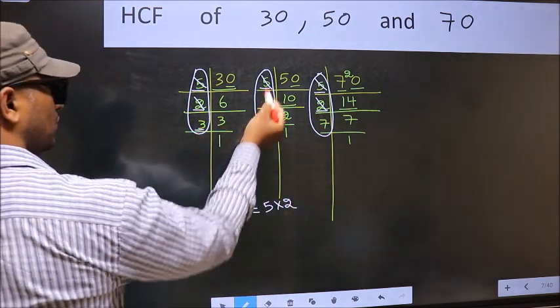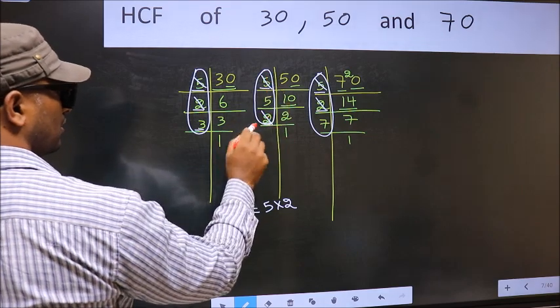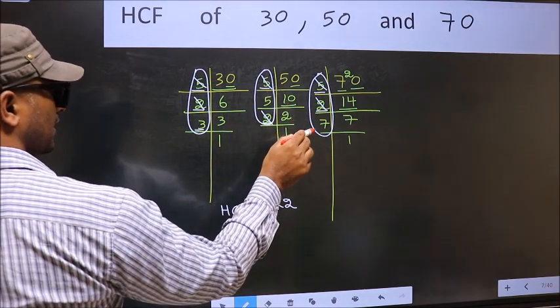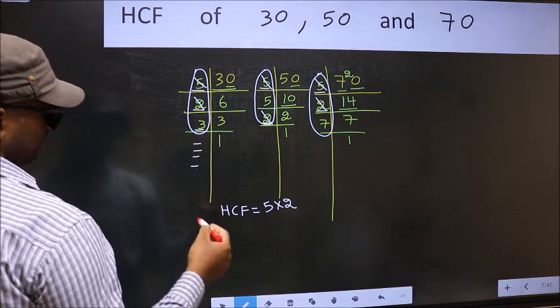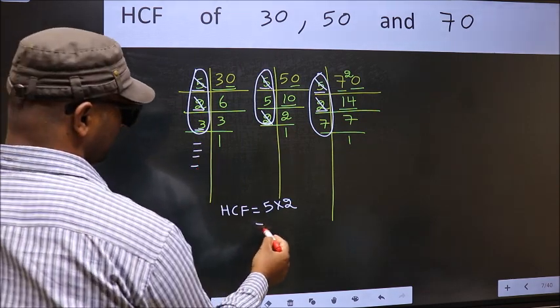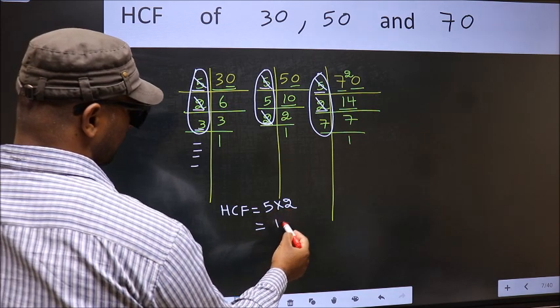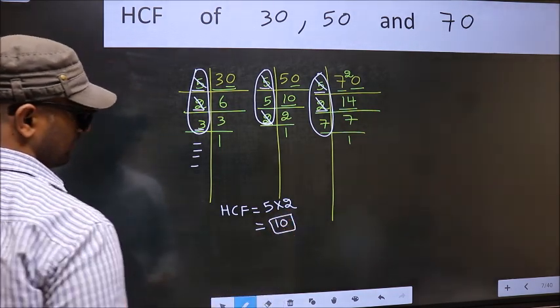Next number 3. Do we have 3 here? No. No need for us to check in the other place. No more numbers have been left out. So our HCF is 5 into 2, which is 10. 10 is our HCF.